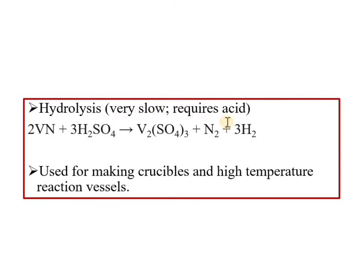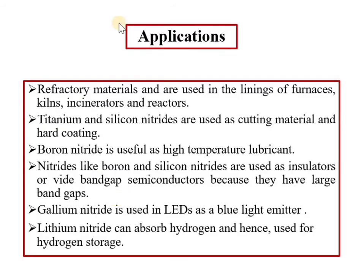Interstitial nitrides are used for making crucibles and high-temperature reaction vessels. In terms of applications of metal nitrides broadly, refractory materials that are thermally stable are used in furnaces, incinerators, reactors, and kilns. Titanium and silicon nitrides are used as cutting materials because they are extremely hard.